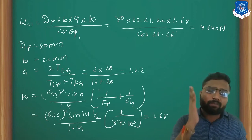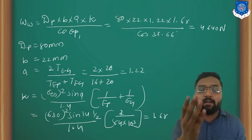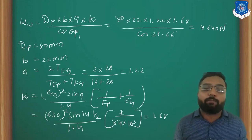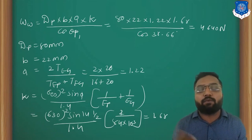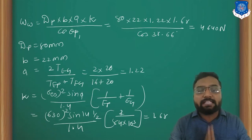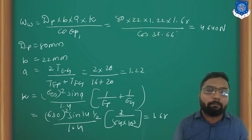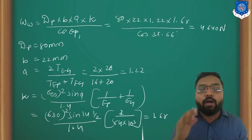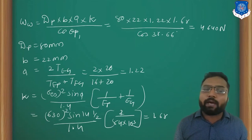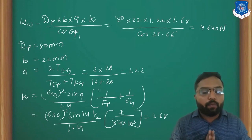The final wear load comes out to 80 × 22 × 1.22 × 1.68 / cos(38.66°) = 4640 N. I hope you understand these things very well — each and every aspect of this example. If you have any doubt regarding this Bevel Gear example, you can directly ask me. In the next session, we are going to discuss about the design of worm gears. Thank you so much.